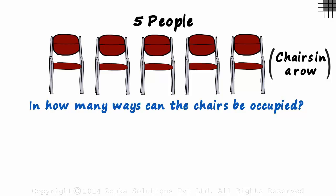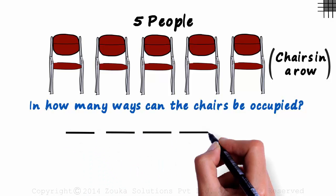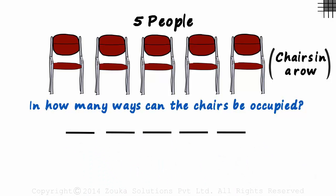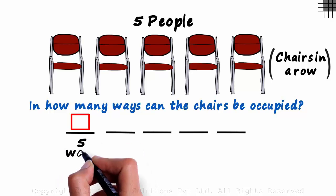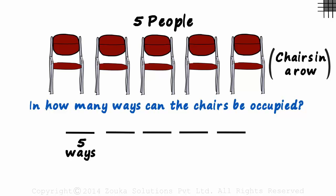Again, let's take these five chairs as five slots, and using our usual technique, let's go slot by slot. In how many ways can the first chair be occupied? Any one of the five people can be seated on the first chair. So there are five different ways in which the first chair can be occupied. Understand the situation now. One of these five is seated on the first chair.